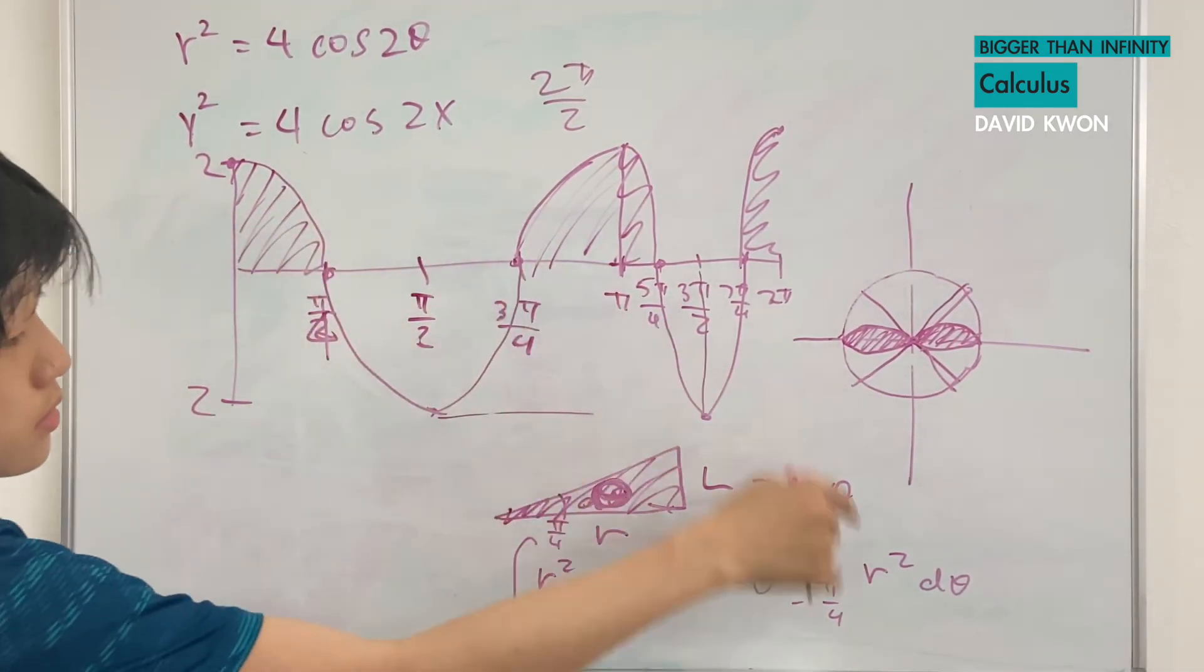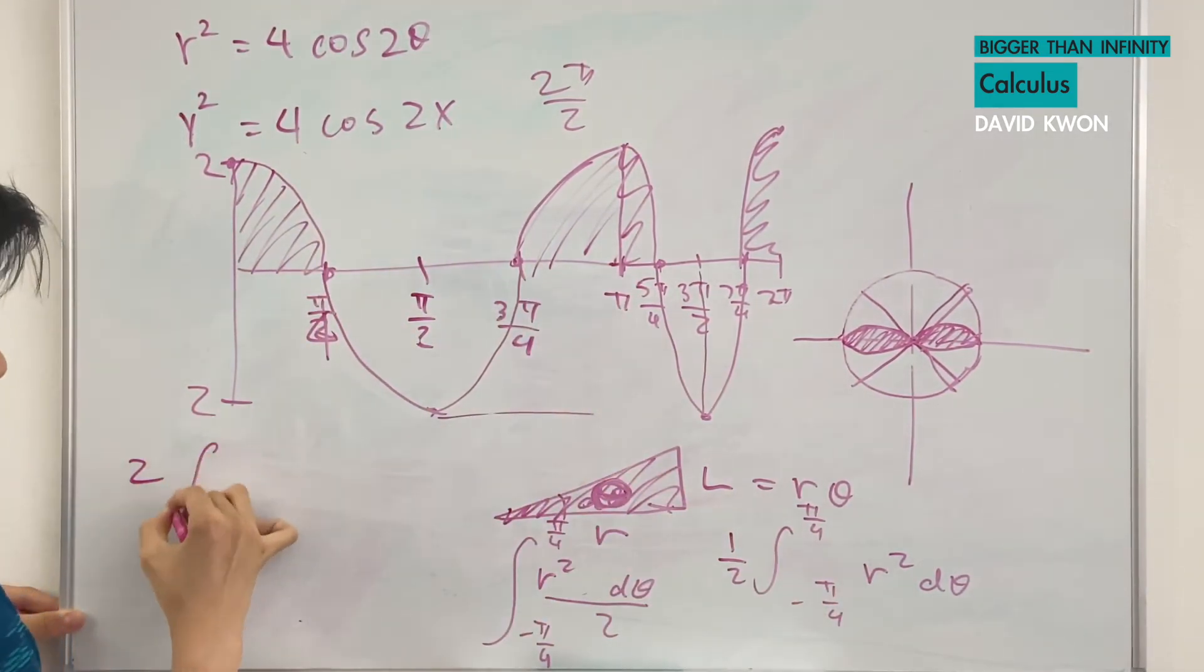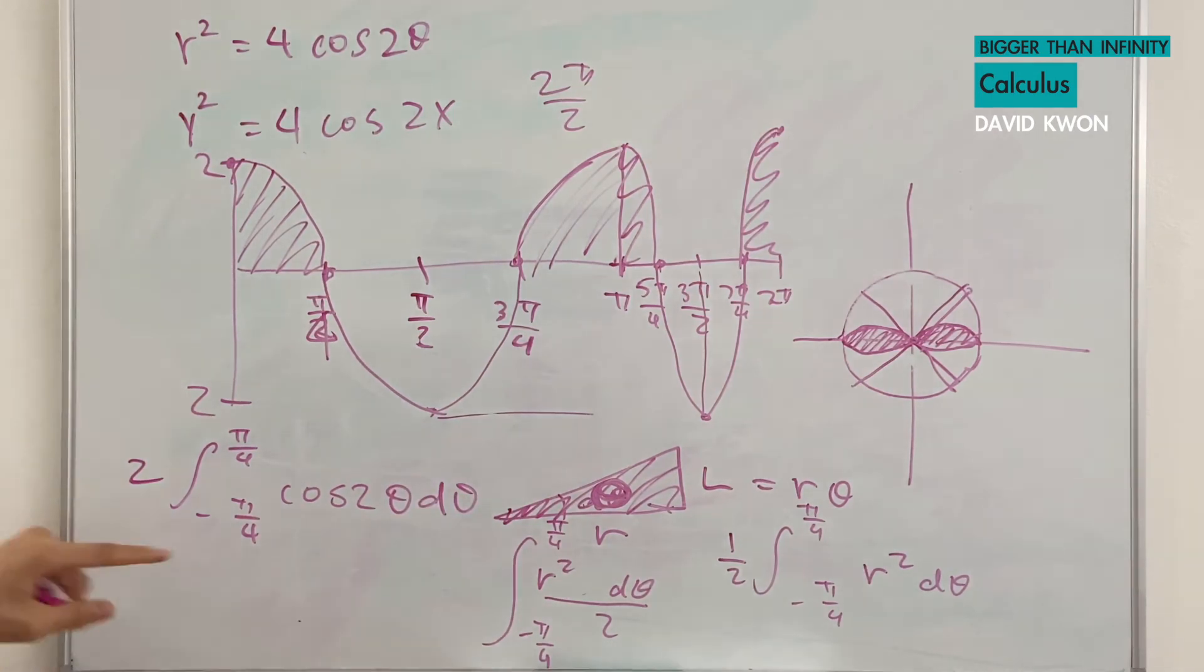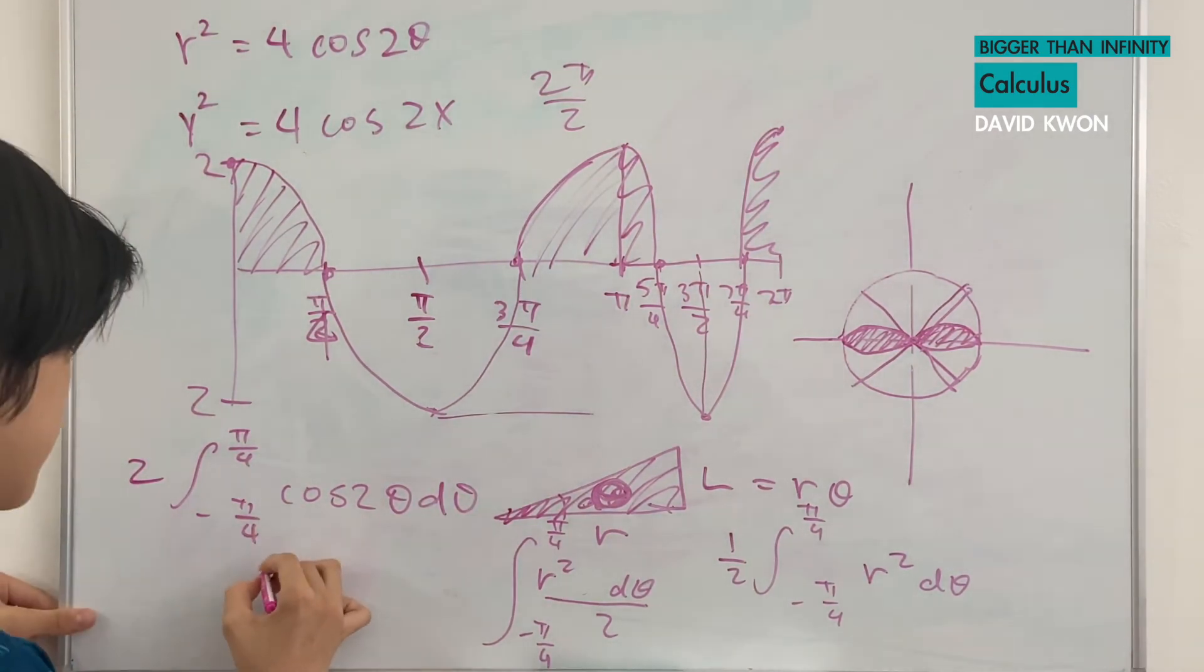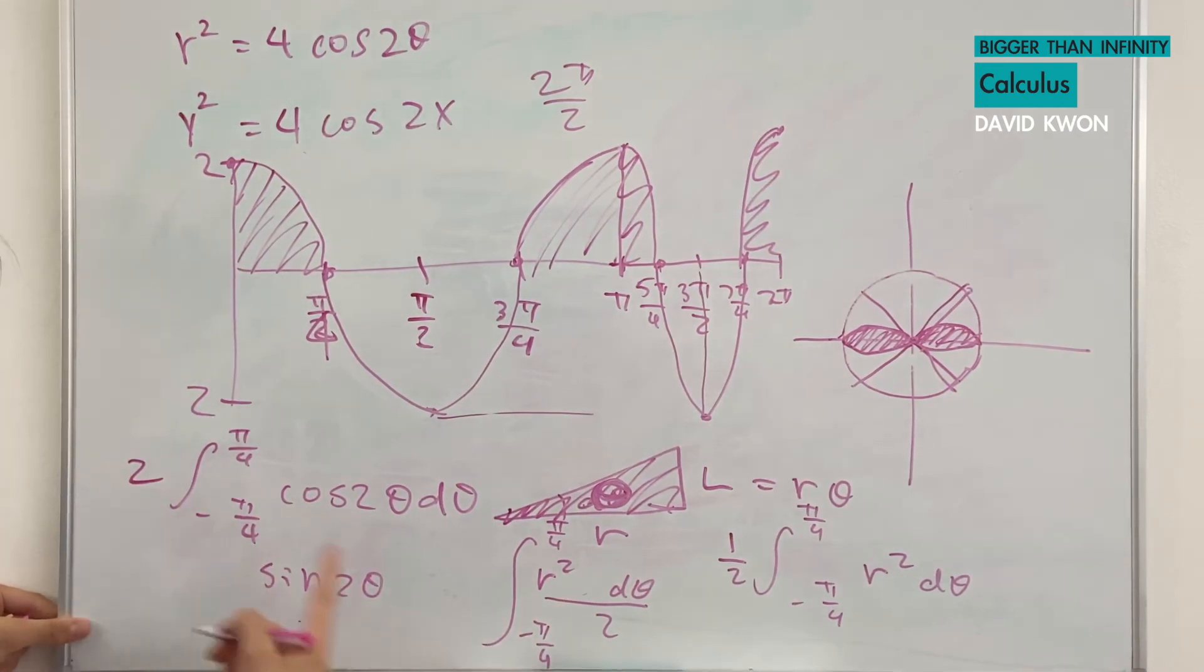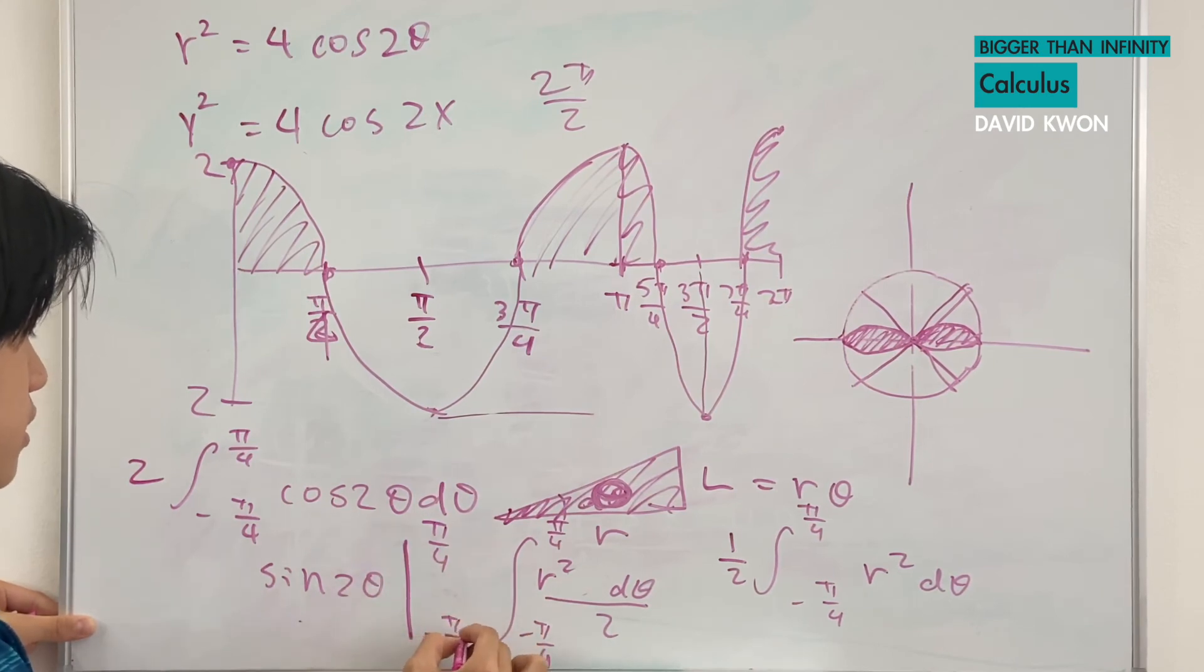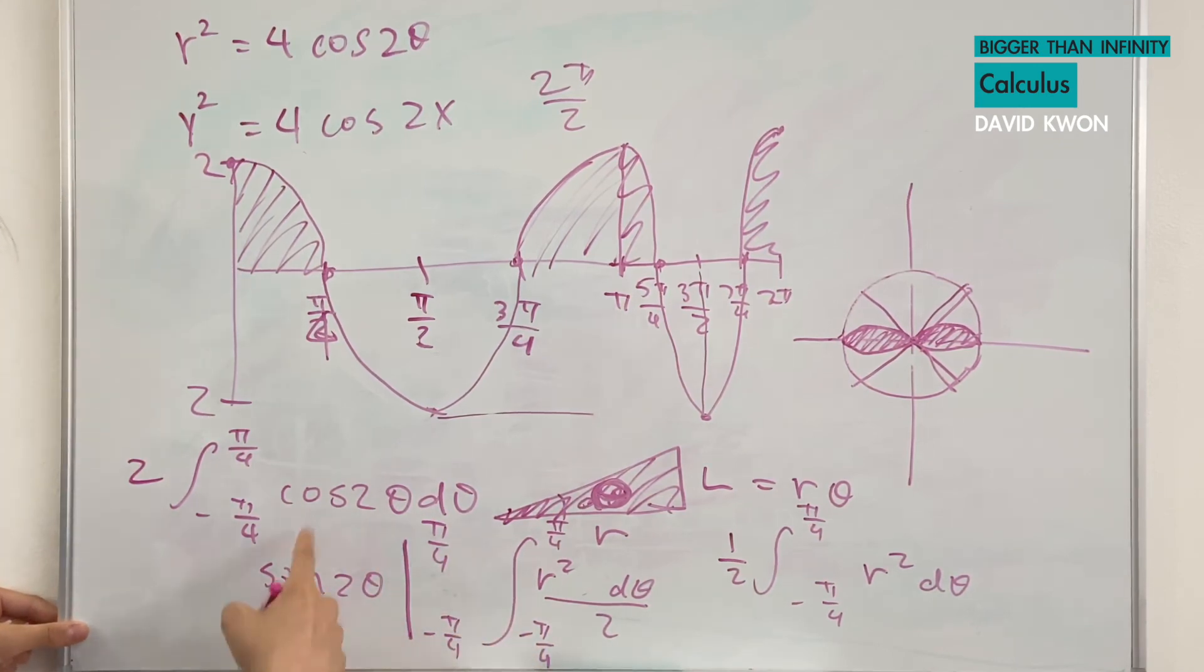So, substituting this into here, we get 2 times the integral of the interval from π over 4 to negative π over 4 of cosine 2θ times dθ. And now, the integral of that is sine 2θ over 2. There's a times 2, so nothing goes there. But we still have the interval from π over 4 to negative π over 4.